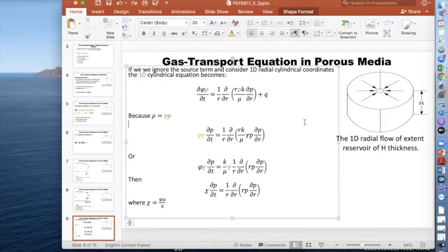Gamma is constant and can be taken outside the time derivative. K and mu are both constant and can be moved outside the derivative. But r is not constant—it's a variable coordinate, so it remains inside with p and the derivative of p with respect to r.